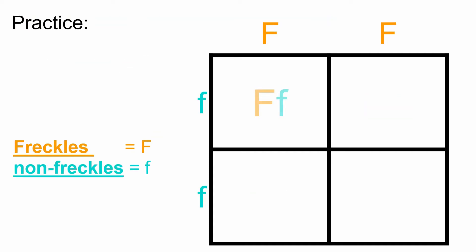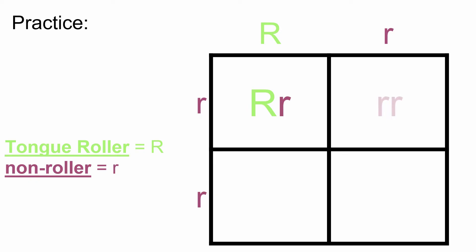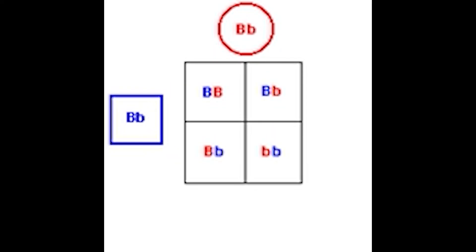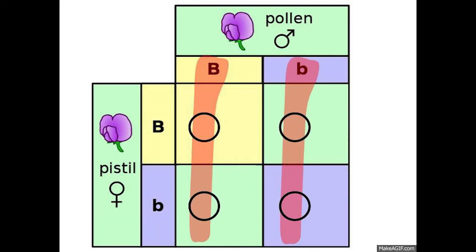Punnett square genes, they're the key to understanding genetics as easy as can be. From dominant genes to recessive, we can see how traits are inherited, it's a guarantee. I'll trace our heritage — it's a guarantee.